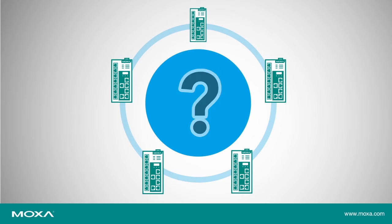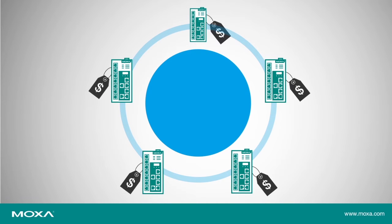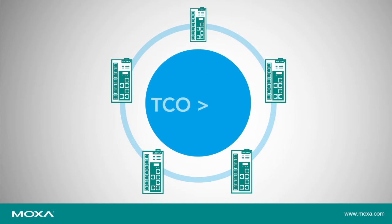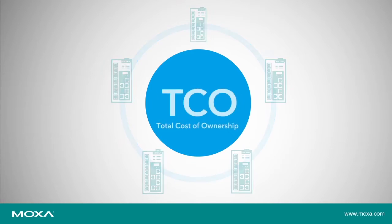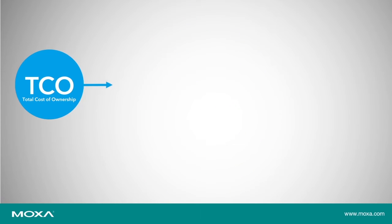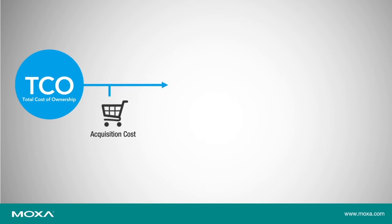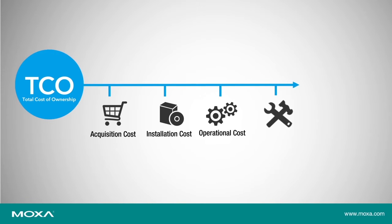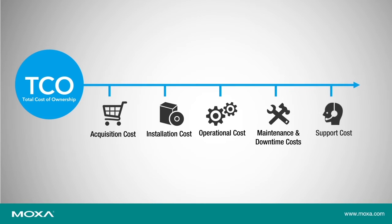But how is the overall cost calculated? At first thought, you might think it's just the cost of the equipment. For deploying industrial networking equipment, TCO can be divided into the cost of acquisition, installation, operations, maintenance and downtime, as well as support.